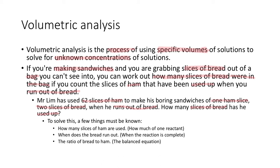You must know how many slices of ham are used, or ideally how much of one reactant. That's your known solution. When does the bread run out? This is when your reaction is complete. And the ratio of bread to ham, which is your balanced equation.